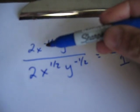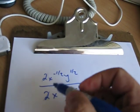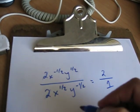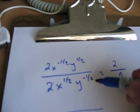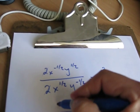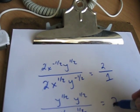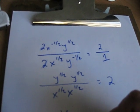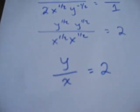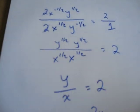Again, remember, negative exponent means it flips to the other side of the dividing line. So this 2 cancels with this 2. That x to the 1 half moves down underneath, x to the 1 half times x to the 1 half. y to the negative 1 half moves up on top, y to the 1 half, y to the 1 half, is equal to 2. So y to the 1 half times y to the 1 half is just y. Same for x. y over x equals 2, so now we have y is equal to 2x.